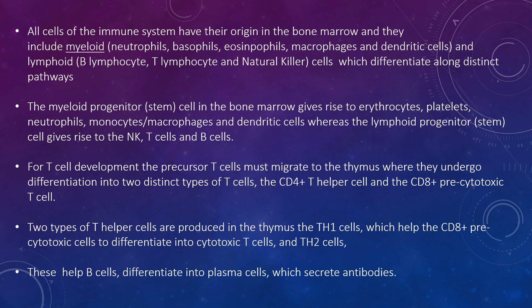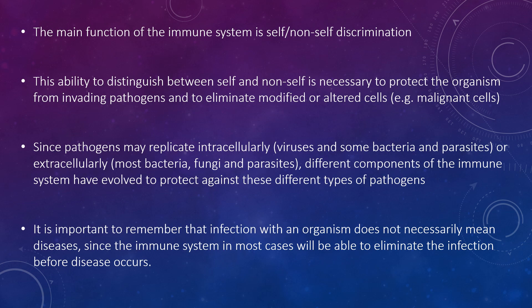Two types of T helper cells are produced in the thymus: TH1 cells, which help the CD8+ precytotoxic cells differentiate into cytotoxic T cells, and TH2 cells, which help B cells differentiate into plasma cells that secrete antibodies. The function of the immune system is self and non-self discrimination — the ability to distinguish between self and non-self is necessary to protect the organism from invading pathogens and to eliminate or alter cells such as malignant cells.